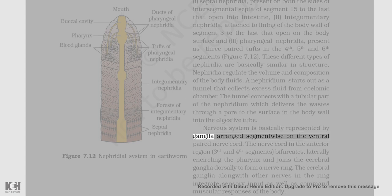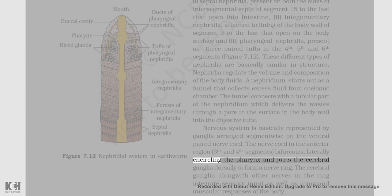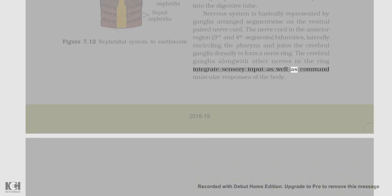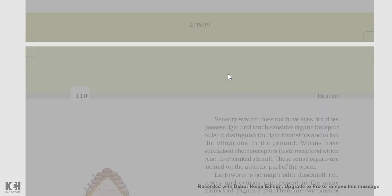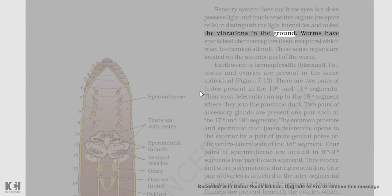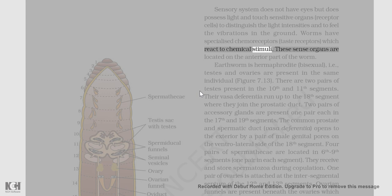The nervous system is basically represented by ganglia arranged segment-wise on the ventral paired nerve cord. The nerve cord in the anterior region (3rd and 4th segments) bifurcates, laterally encircling the pharynx and joins the cerebral ganglia dorsally to form a nerve ring. The cerebral ganglia along with other nerves in the ring integrate sensory input as well as command muscular responses of the body. The sensory system does not have eyes but does possess light- and touch-sensitive organs (receptor cells) to distinguish light intensities and to feel vibrations in the ground. Worms have specialized chemoreceptors (taste receptors) which react to chemical stimuli. These sense organs are located on the anterior part of the worm.